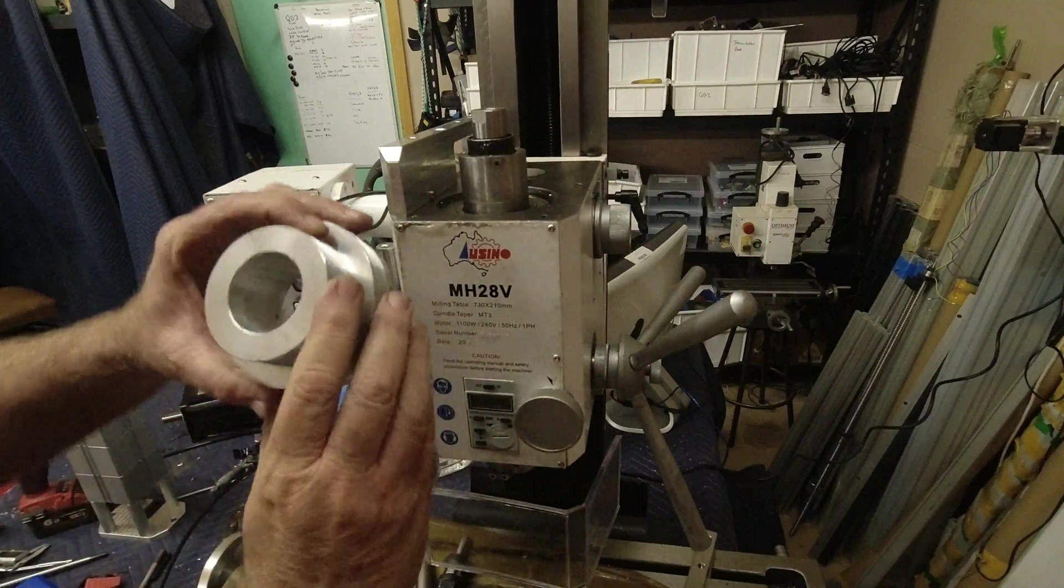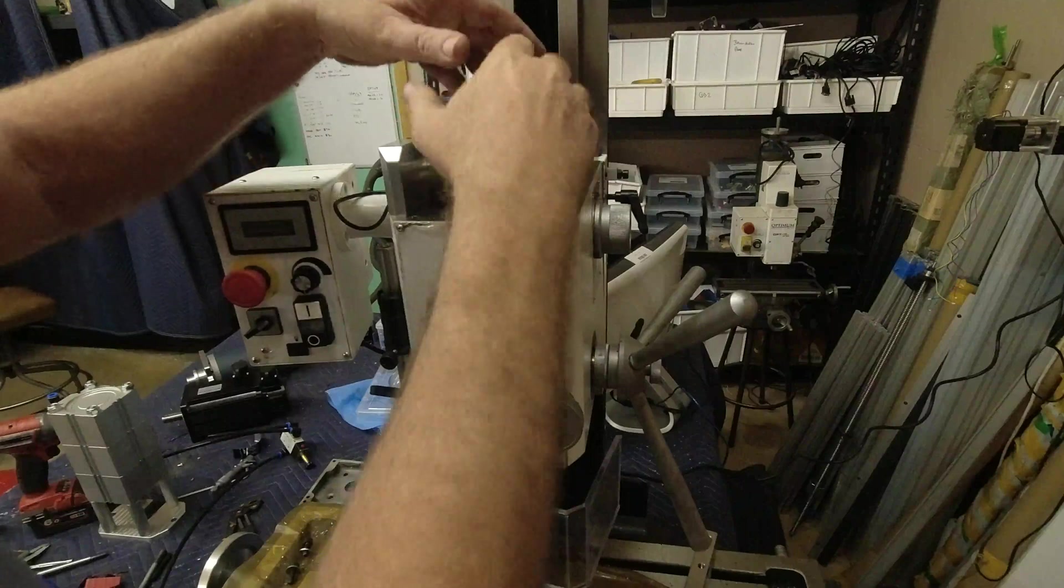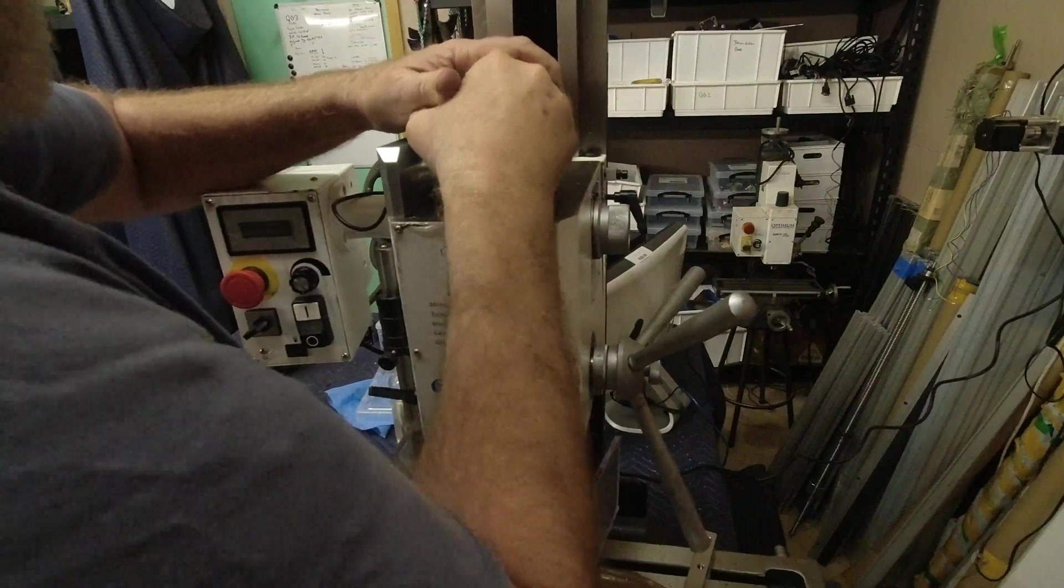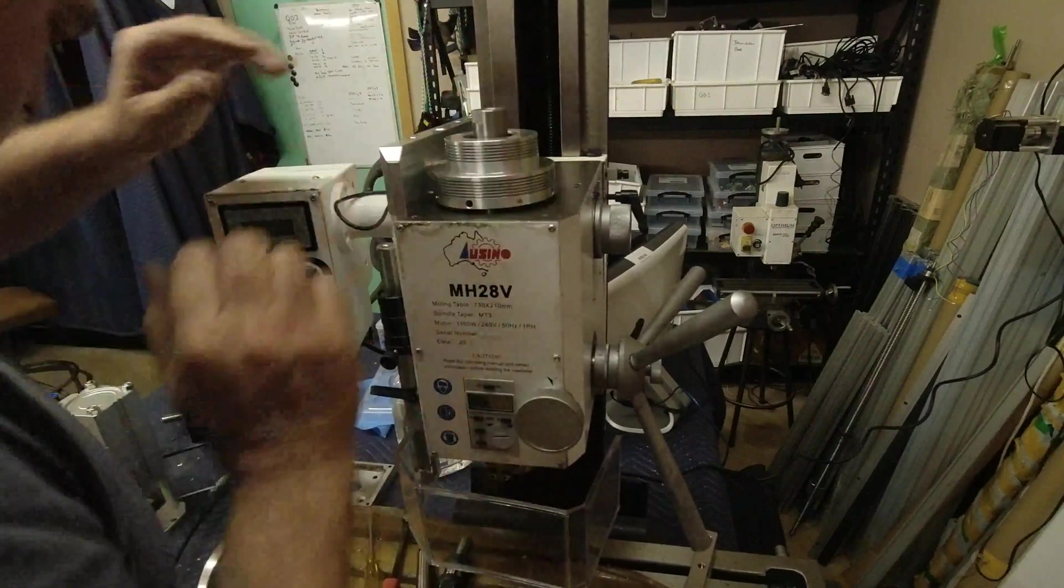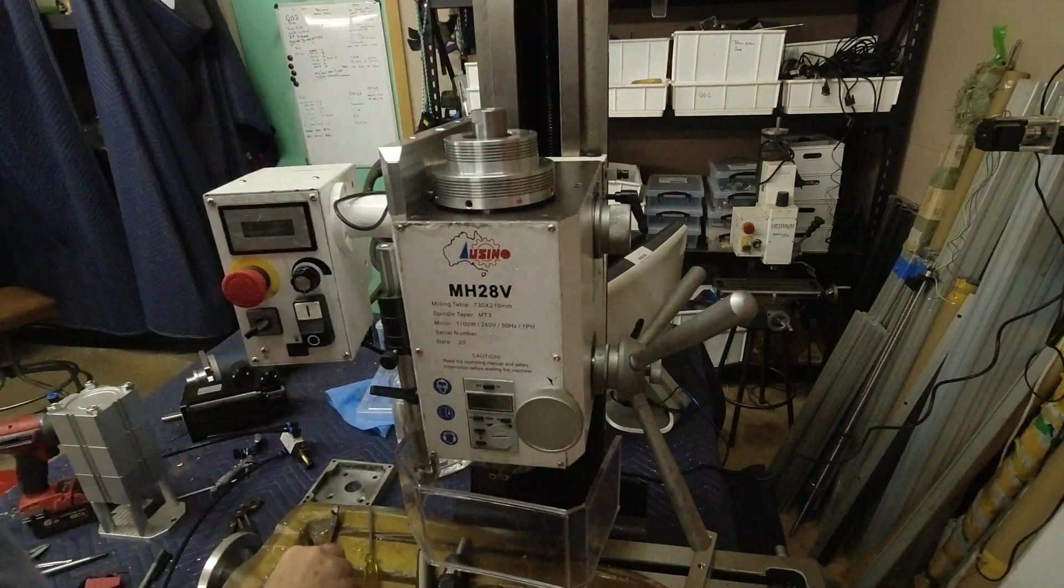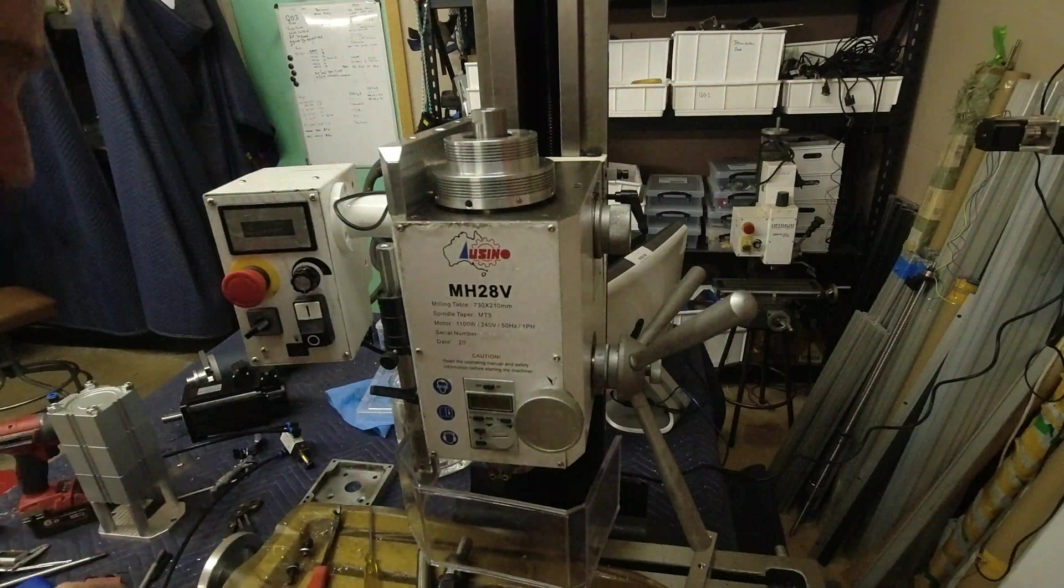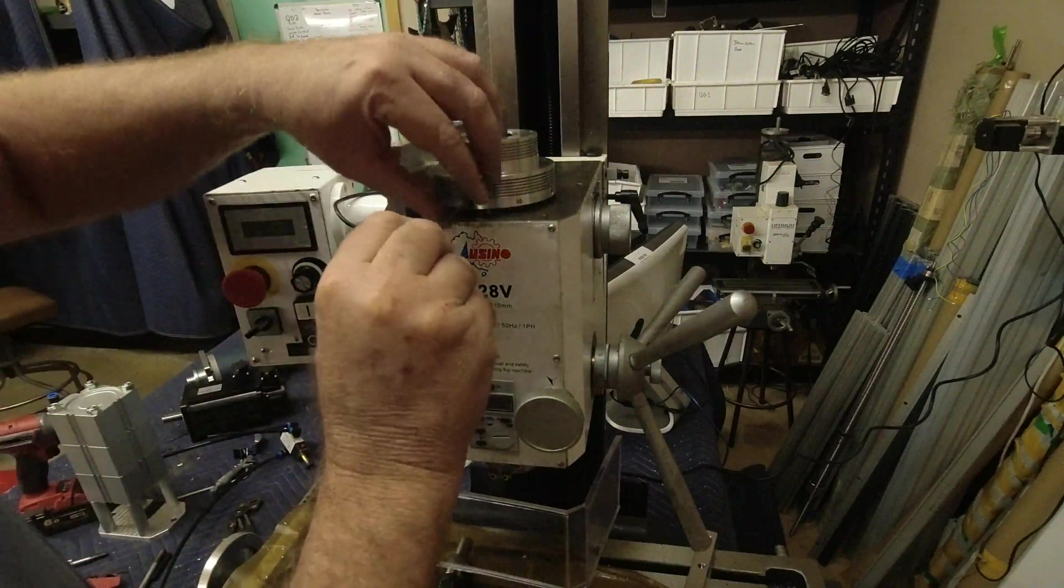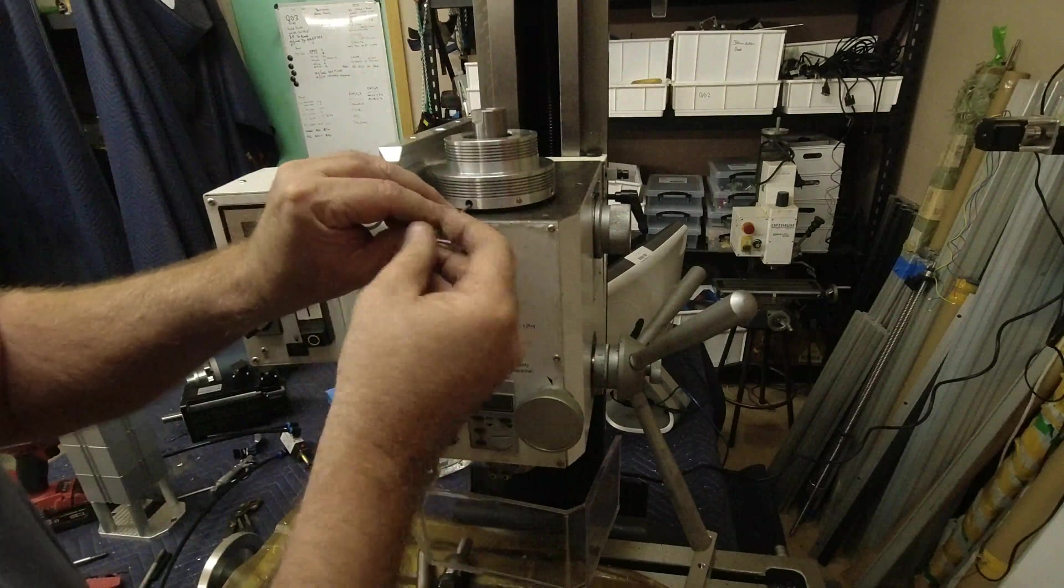We then get our pulley. Just make sure it's seated at home. We'll do up our four grub screws.